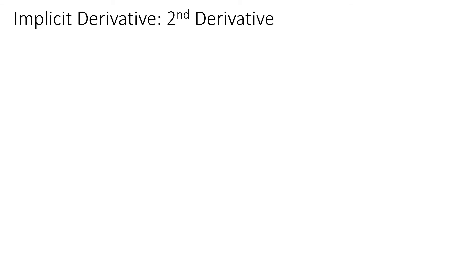Today's lesson is the second derivative of the implicit derivative. Previously we talked about how to find a derivative using implicit differentiation. Today we're going to learn how to use the implicit derivative to find the higher derivative — that could be the second, third, and so on.